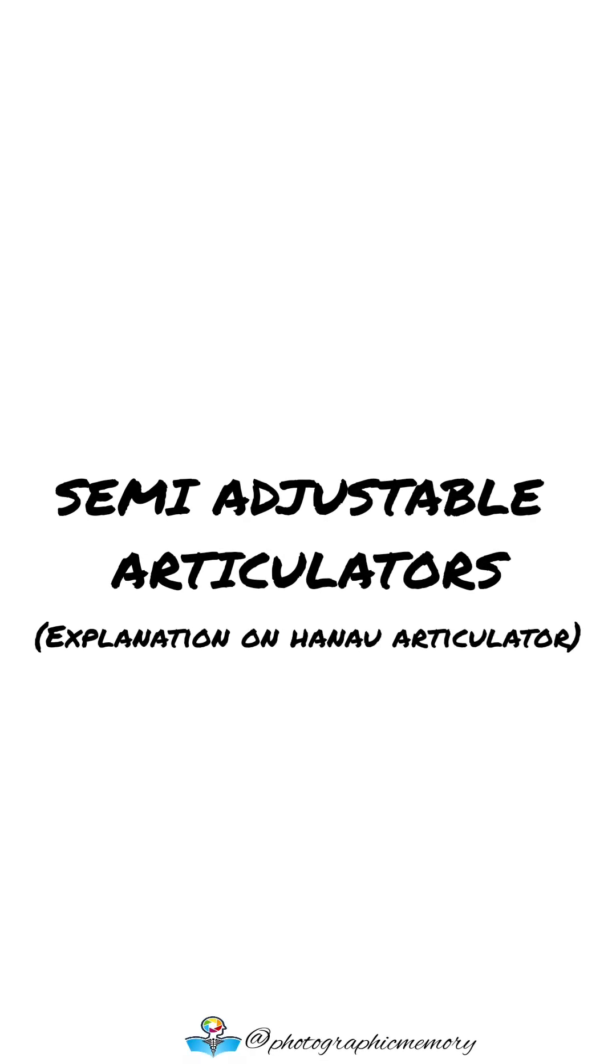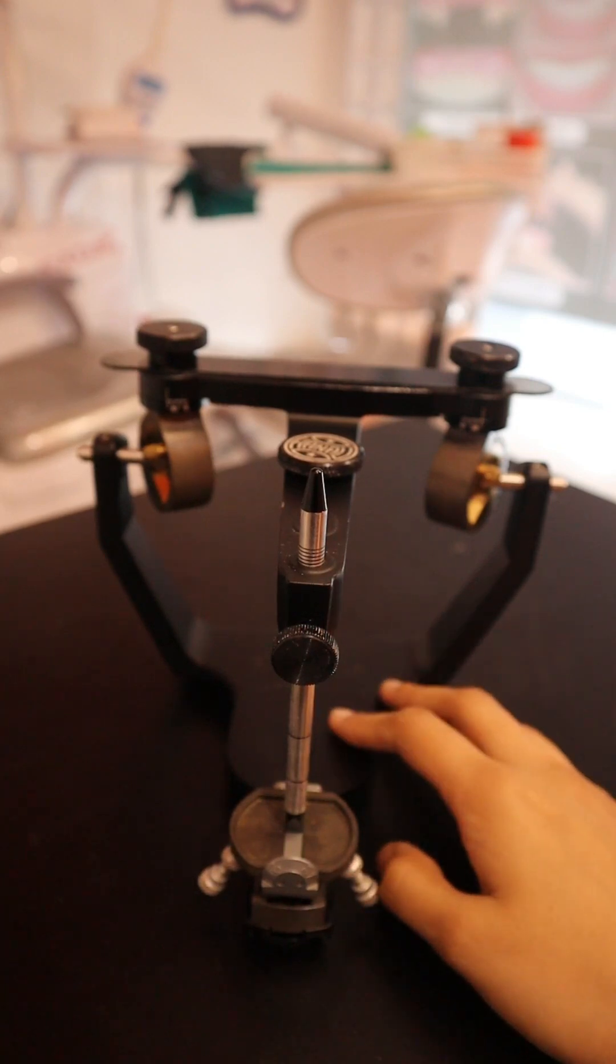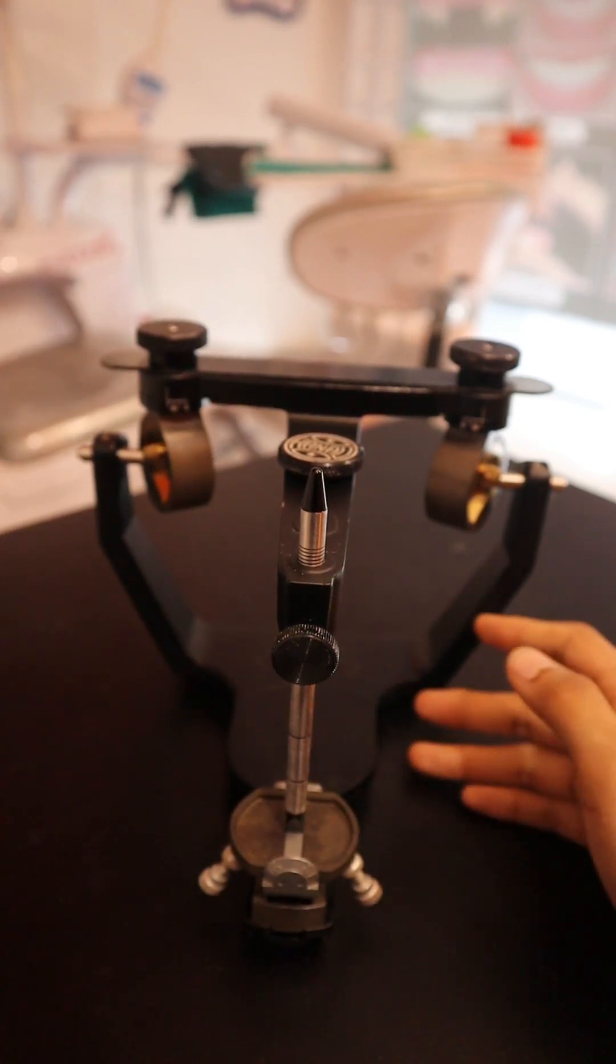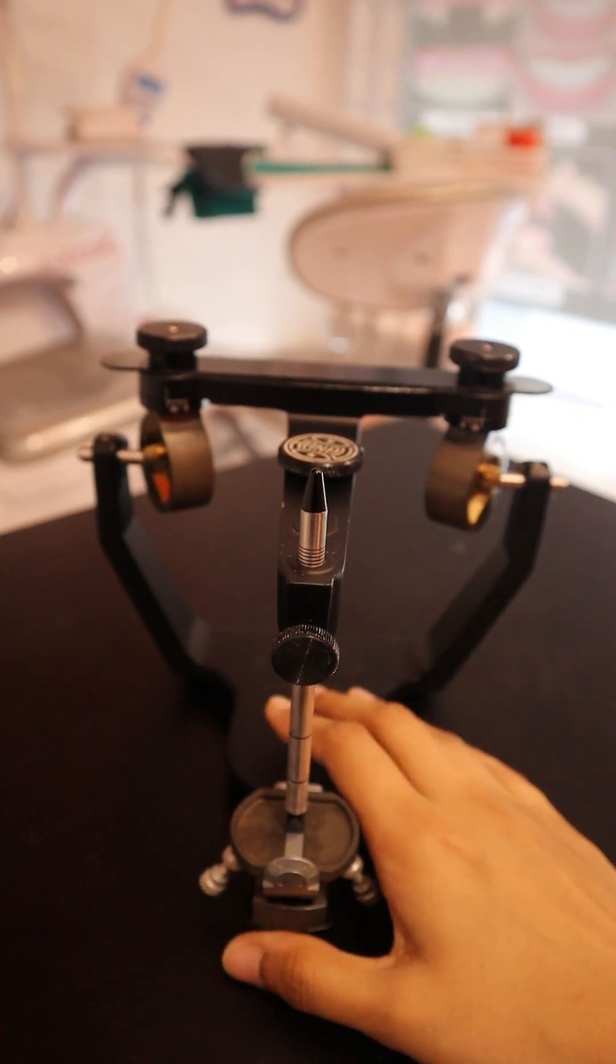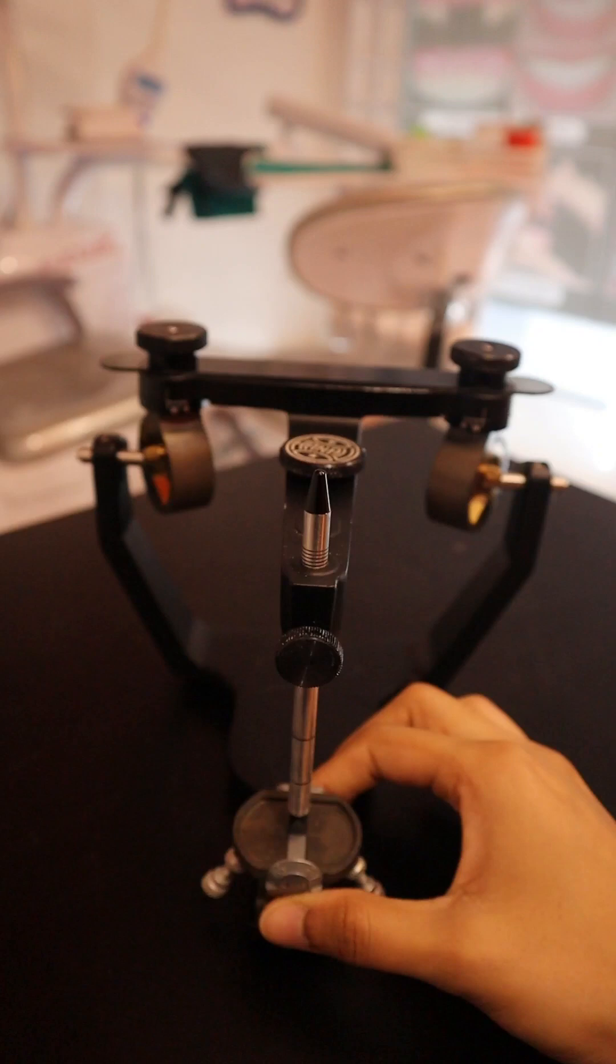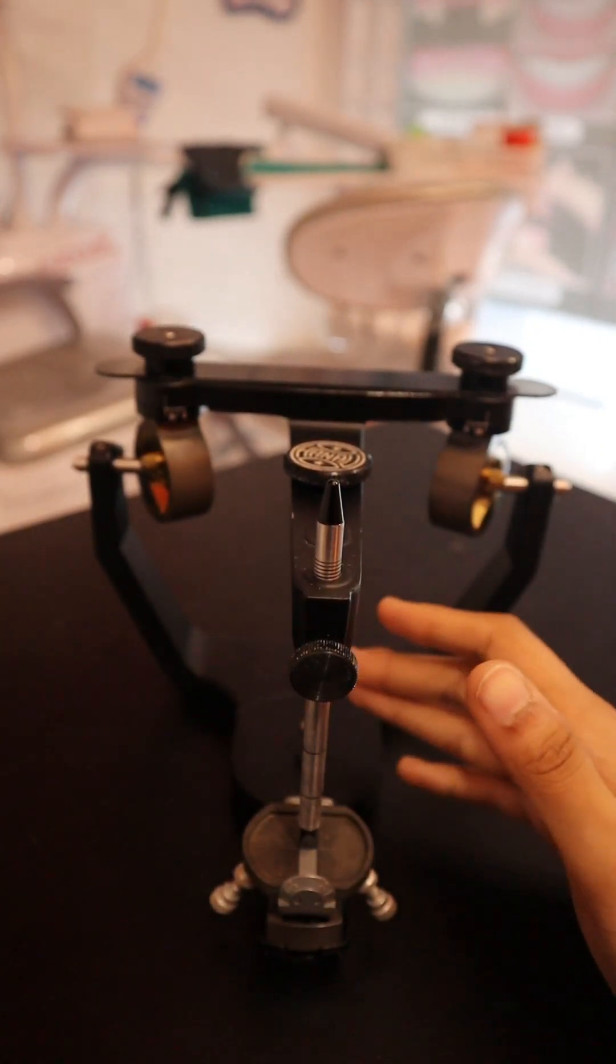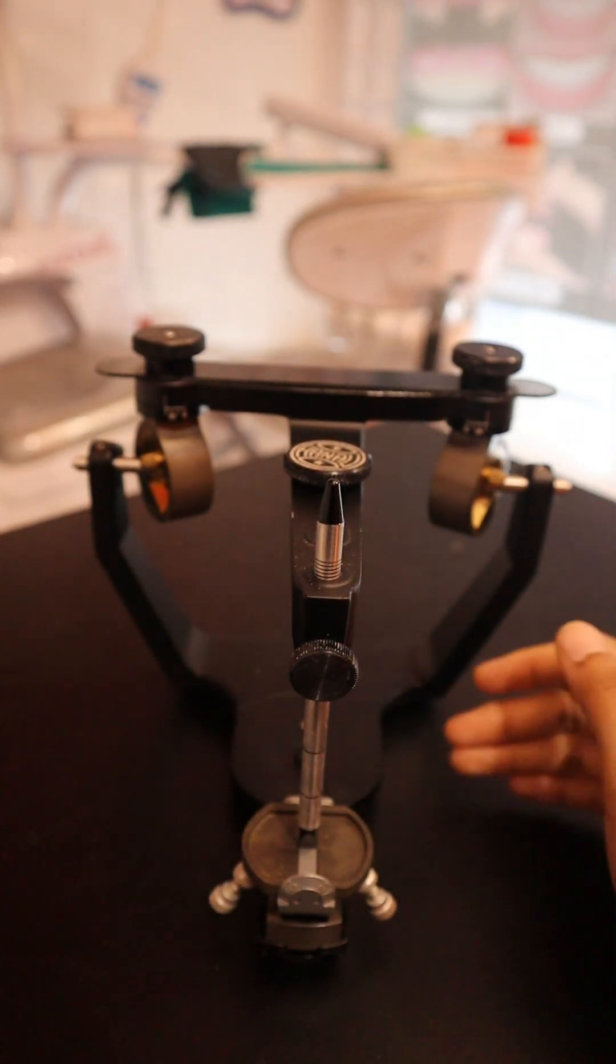Good morning everyone, welcome to my channel Photographic Memory. Today I'll be teaching you about Hanau wide view articulators, which are basically semi-adjustable articulators. These are based on the arcane principle where all the condylar guidances are associated with the upper articulator member and the condylar elements are situated in the lower member of the articulator.